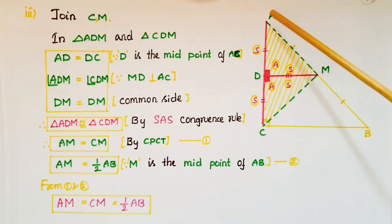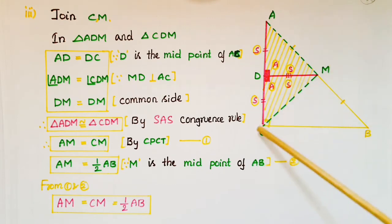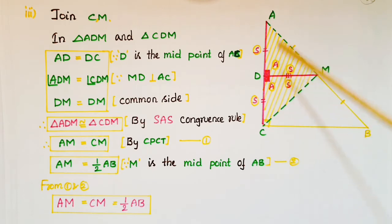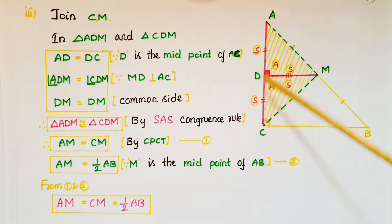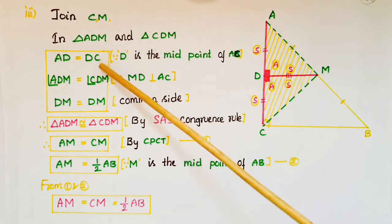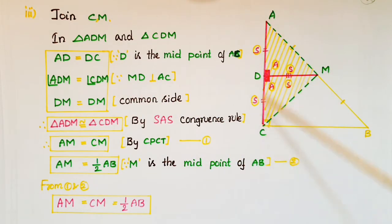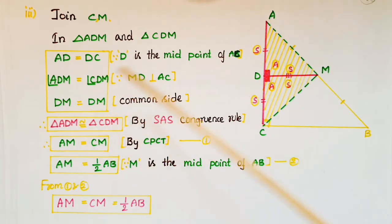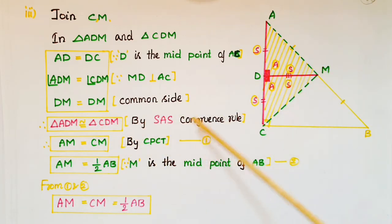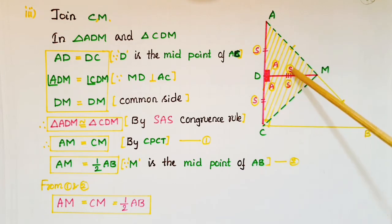Now we have to prove that CM equals AM equals half of AB. First, join C and M. CM and AM are sides of two triangles. Consider triangle ADM and triangle CDM: AD equals DC because D is the midpoint of AC, which we proved above. MD is perpendicular to AC, so angle ADM equals angle CDM. DM is the common side of both triangles. Therefore, triangle ADM is congruent to triangle CDM by the SAS congruence rule.